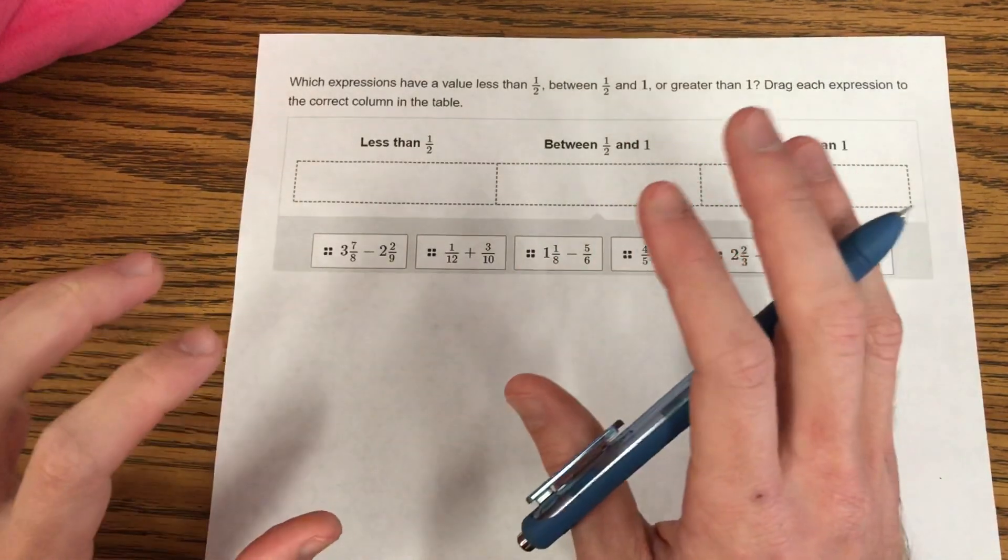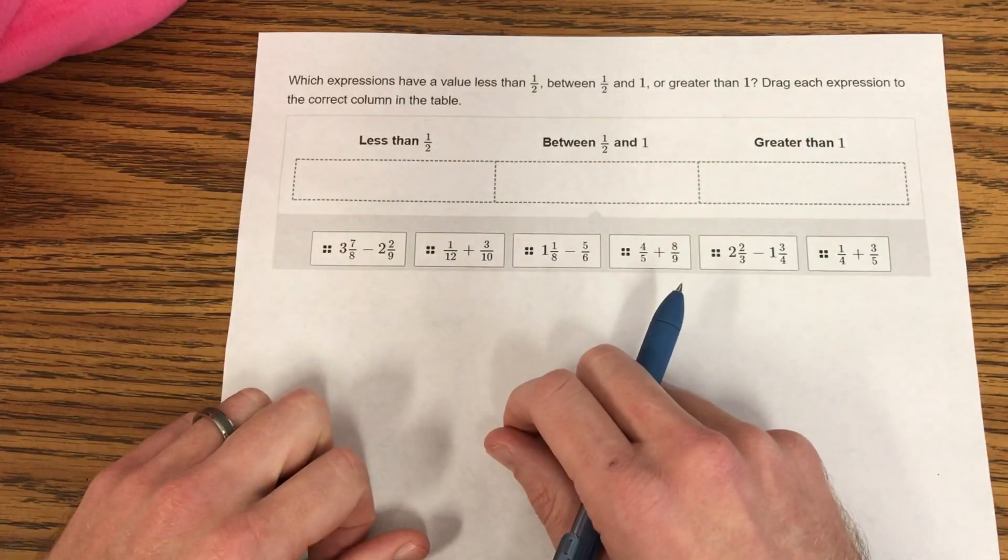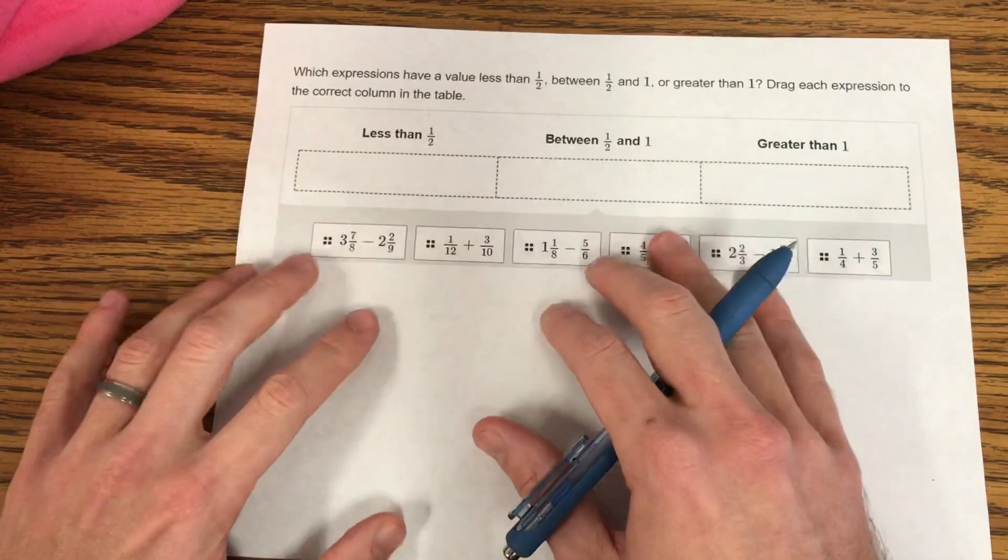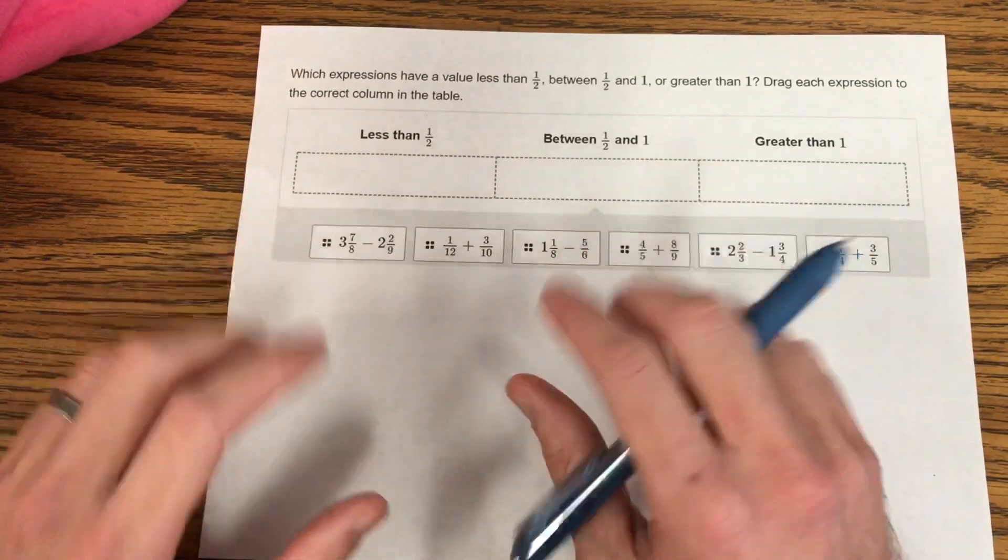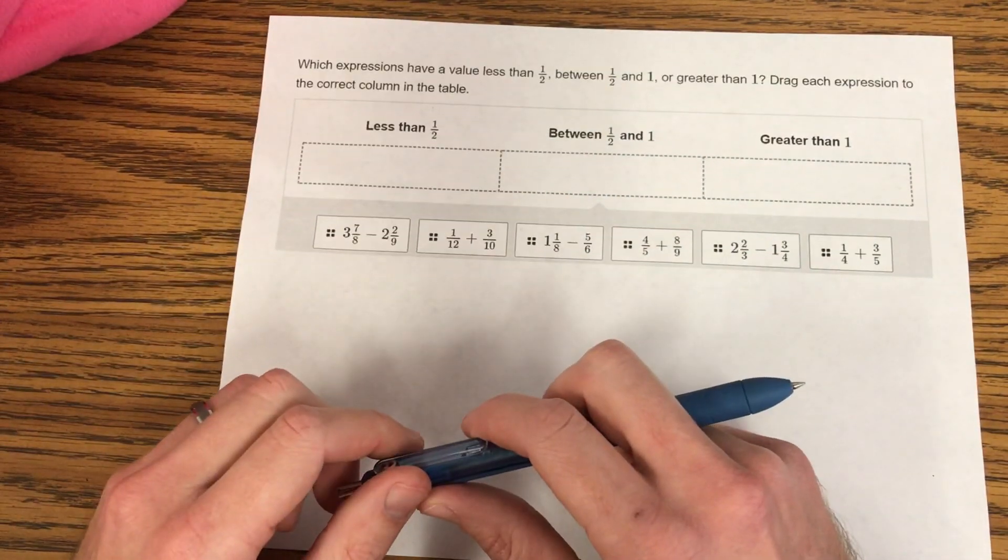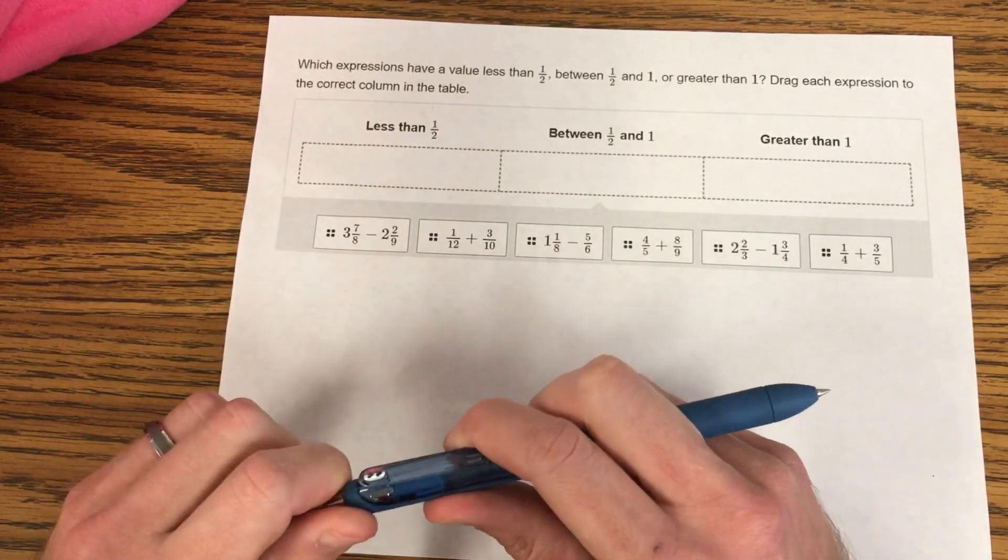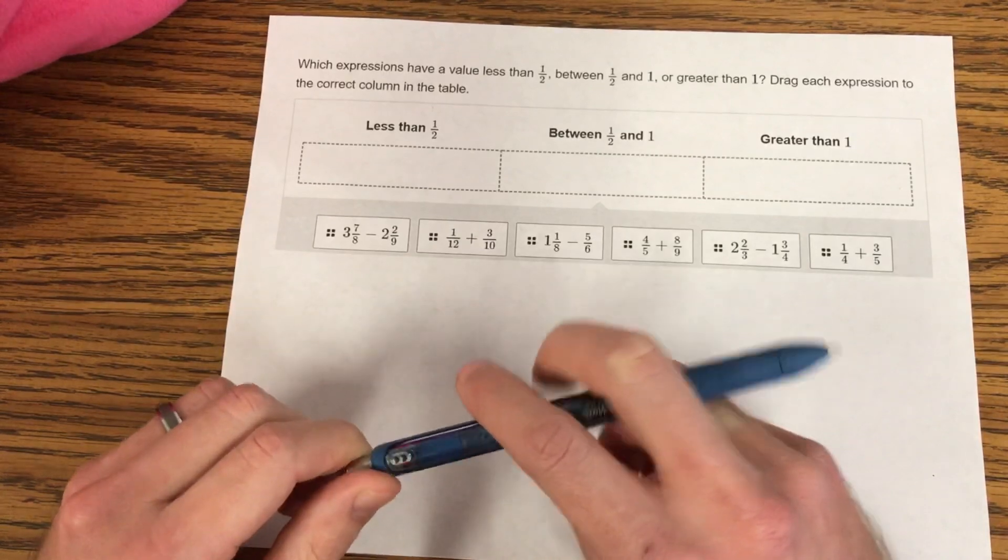We're going to take a look at a couple of the questions from the standards masteries. We're going to look at a few strategies that can help us to be more successful, more accurate on this mastery. And then at the end, you're going to take a few questions and see if you are ready to go. And if you're not, please re-watch this or come and ask me questions for help. I know that you can do this.